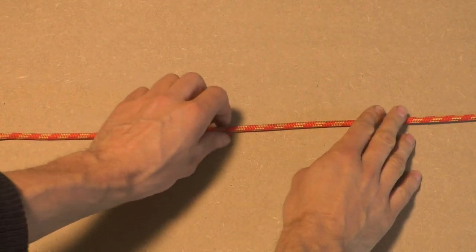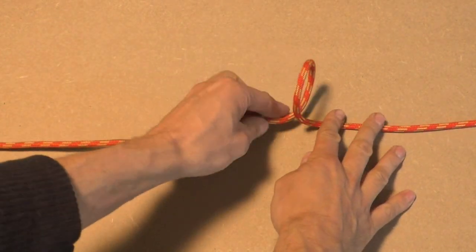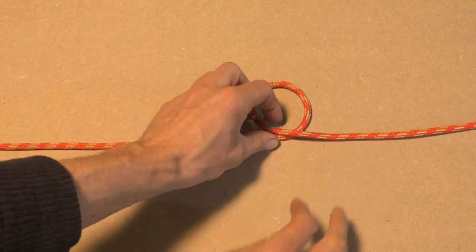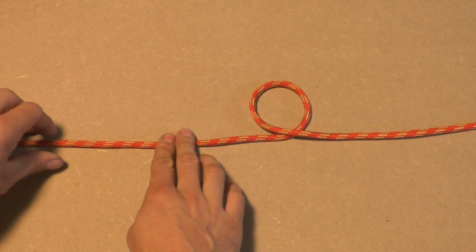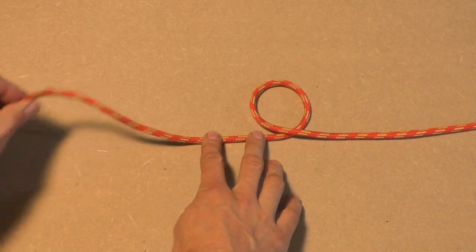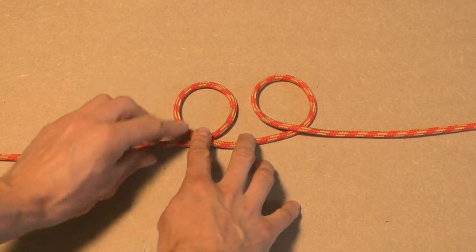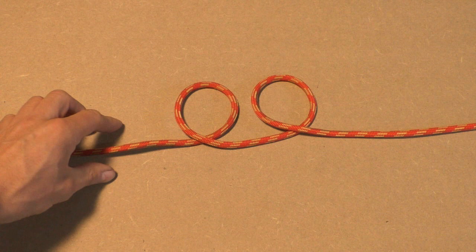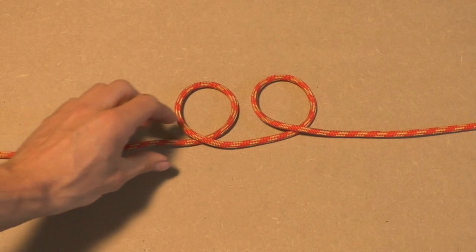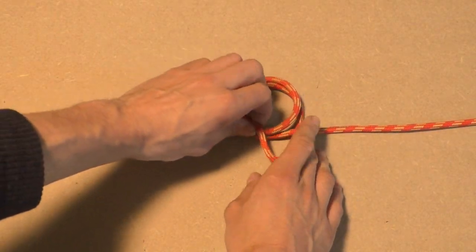To make the midline clove hitch, we start out by making two identical loops in the line. Next we stack the two loops on top of each other.